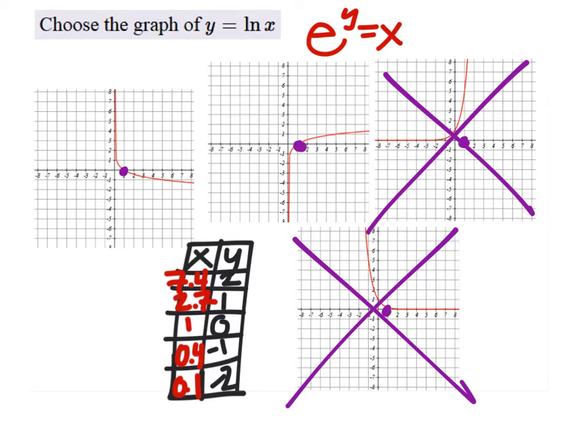So what about these other ones? As x increases, or as y increases, x does as well. For example, when y is 2, x should be like 7.4, right? Something around here. This graph doesn't go through that point, but this one does. So it looks like this is our answer.